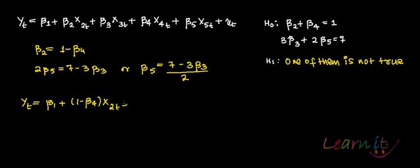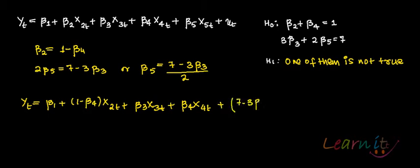So the equation becomes: x2t plus beta 4 x2t plus beta 3 x3t plus beta 4 x4t, and in place of beta 5 write 7 minus 3 beta 3 divided by 2, times x5t, plus vt x3t. Your error term will change.